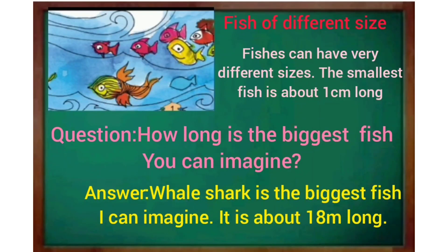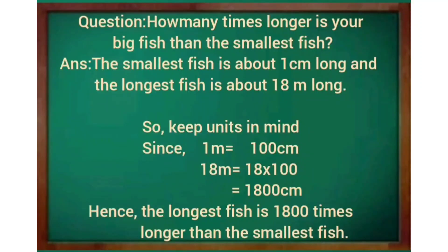The next topic is fish of different sizes. Fishes can have very different sizes. The smallest fish is about 1 cm long. How long is the biggest fish you can imagine? The whale shark is the biggest fish I can imagine — it is about 18 metres long.